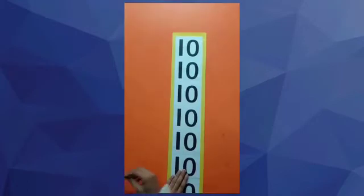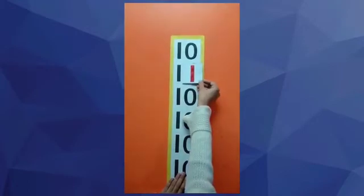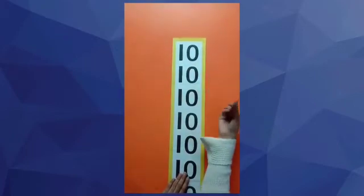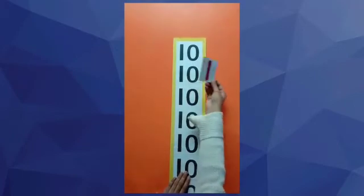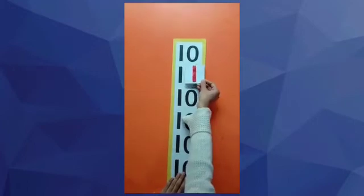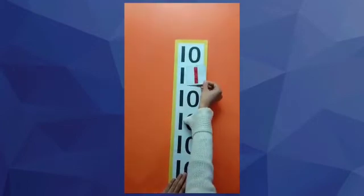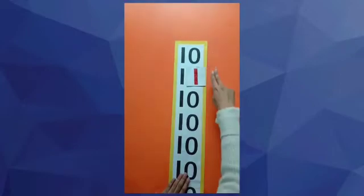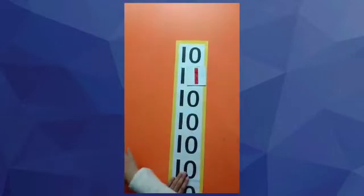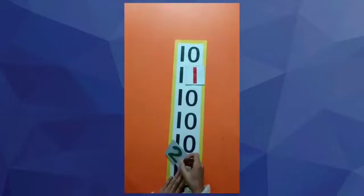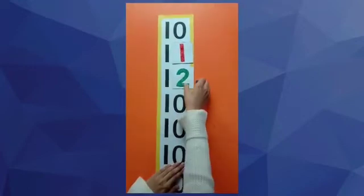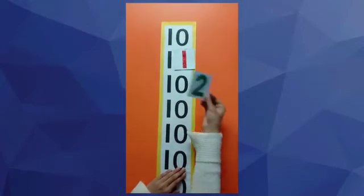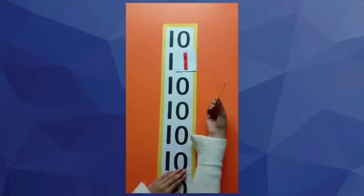So my dear kids, if we put 1 in the place of 0, it becomes 11. Ten and 1 is 11. Ten and 2 is 12.